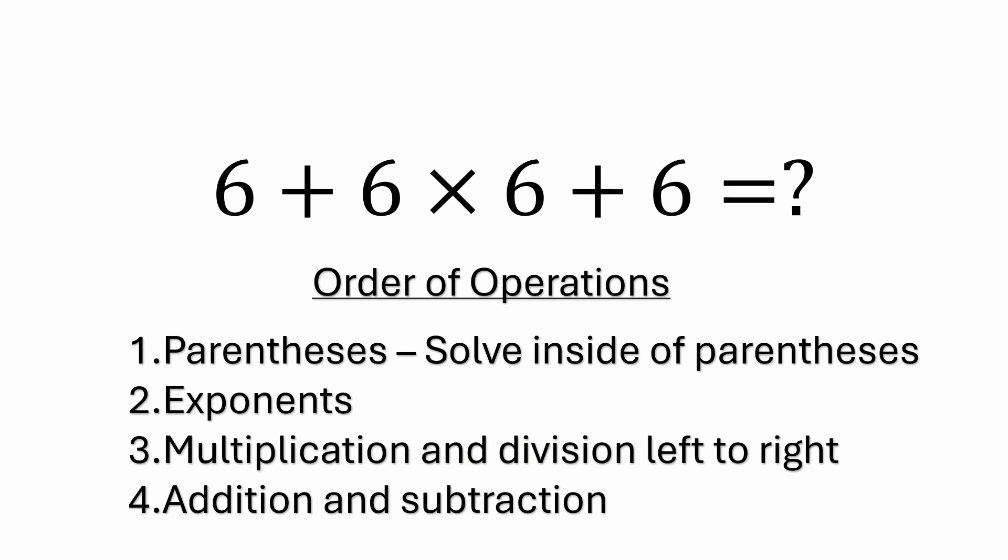All right, so: six plus six times six plus six. We've got the order of operations. If you remember how that works — first you look for parentheses and solve everything inside them, then look for exponents, then multiplication and division (those have equal precedence and are solved left to right), and then finally step four would be addition and subtraction.